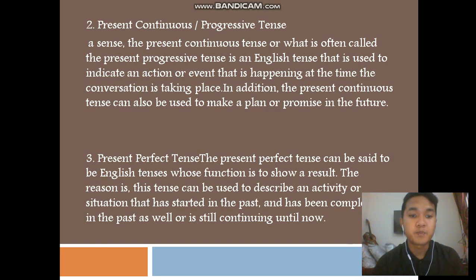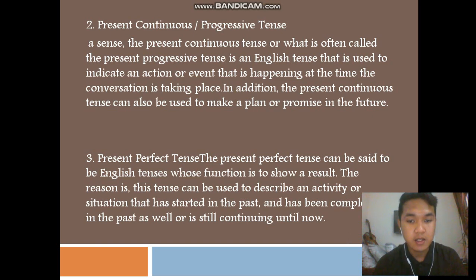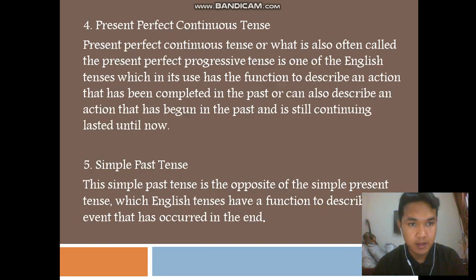Number three: present perfect tense. The present perfect tense can be said to be an English tense whose function is to show a result. This tense can be used to describe an activity or situation that has started in the past and has been completed in the past as well, or is still continuing until now.